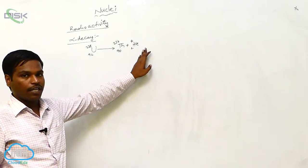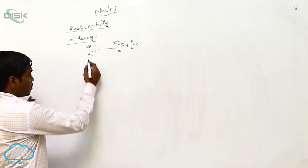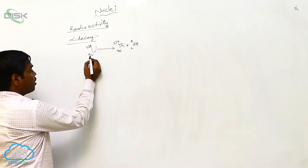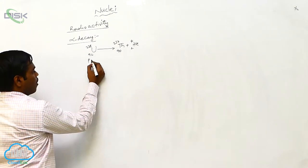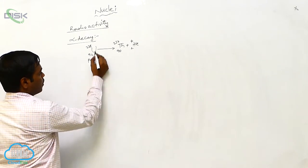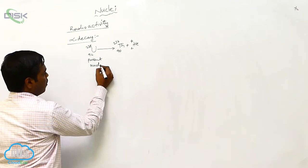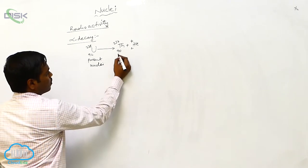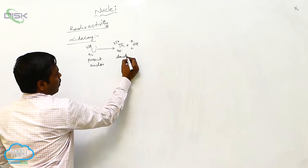This is called alpha decay. In this alpha decay, uranium-92, 238 is called the parent nuclei, and thorium is called the daughter nuclei.